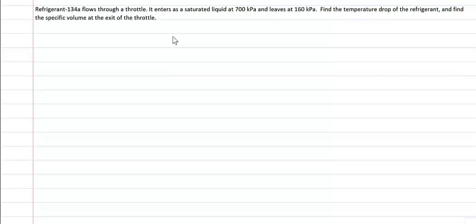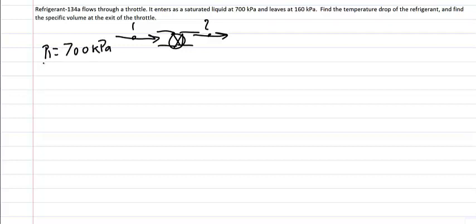Our illustration for this problem shows a throttle. Let's let point 1 represent the inlet and point 2 represent the exit from this particular throttle. We're told that at point 1 we have a pressure of 700 kPa and that 1 is a saturated liquid.